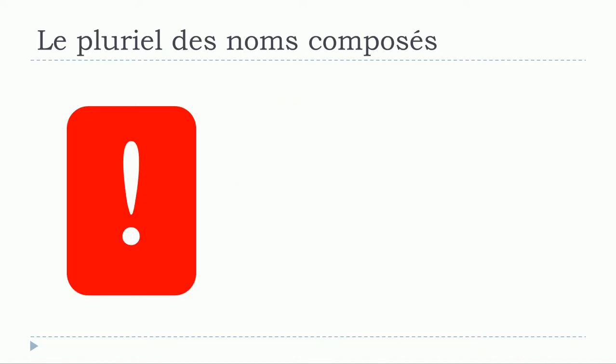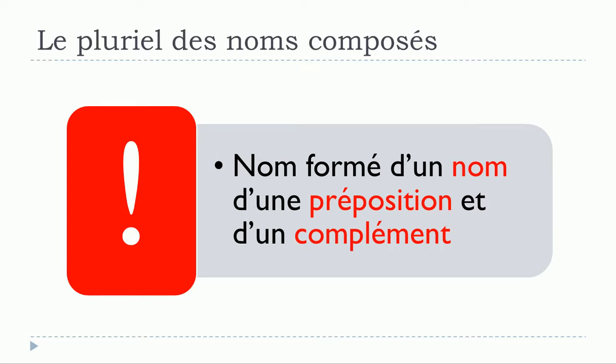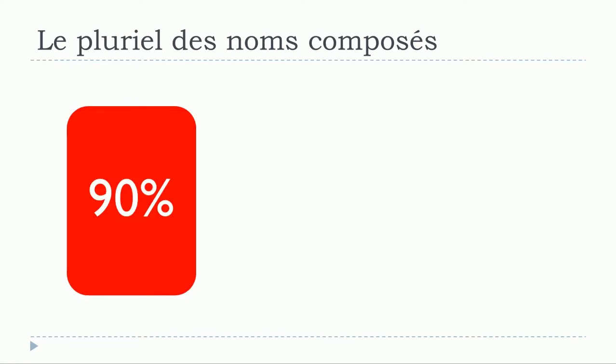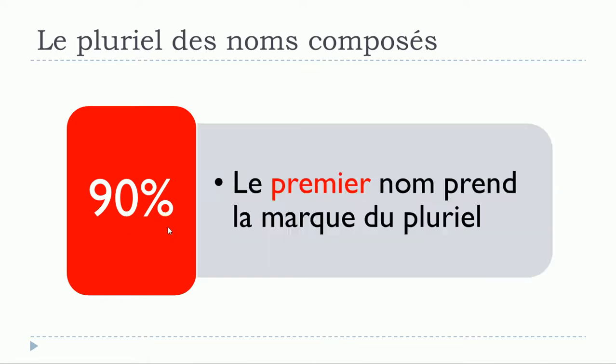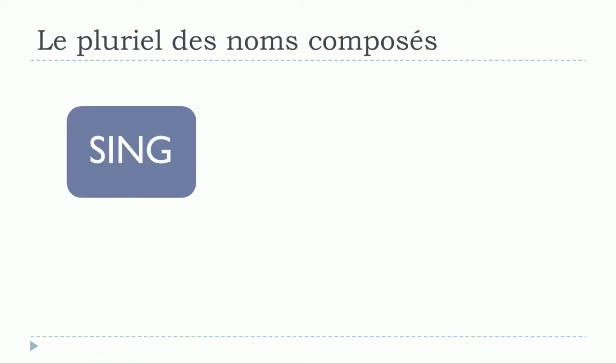We'll start with the first one. The first one will be un nom composé where the first part will be un nom, then the second part will be une préposition, and the last part will be un complément. In that case, well in like 90% of the cases, the rule will be that only le premier nom will take the mark of the plural.